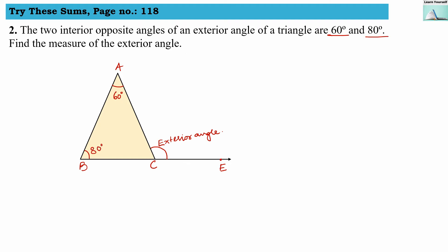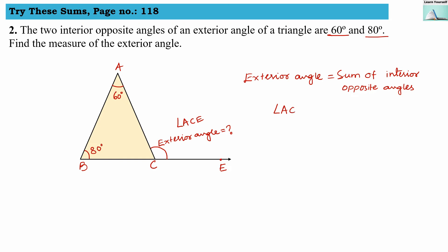We have to find the measure of the exterior angle ACE. Using the exterior angle property, the exterior angle equals the sum of the interior opposite angles. So angle ACE equals angle A plus angle B, which is 60 degrees plus 80 degrees, giving exterior angle ACE equals 140 degrees.